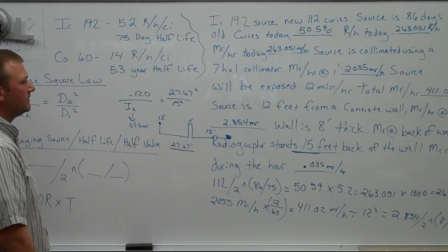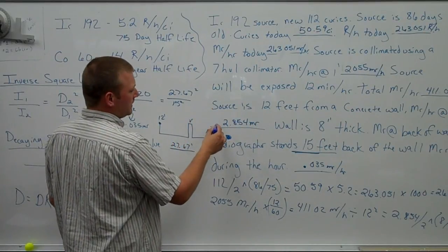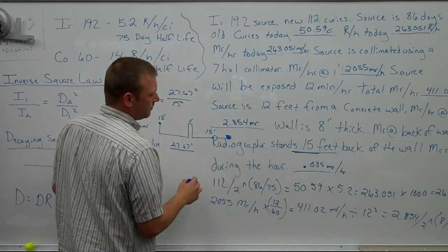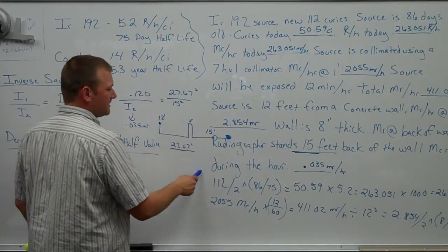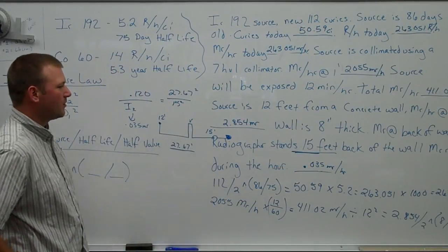We cut the time way down to 12 minutes per hour. That's 411. The source is 12 feet away, so now we back up. We're at 2, which is a 2 mR boundary or pretty close to. Backside of the wall .120. We go back another 15 feet. Decays even further, way down to .035 mR per hour.